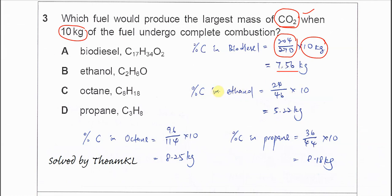The percentage of carbon in ethanol is 24 over 46, the mass fraction, times 10 kg, giving 5.22 kg. For octane, you follow the same calculation: 96 over 114 times 10 kg.